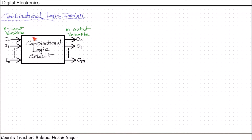In this lecture we will start with a new topic: combinational logic design. A combinational circuit consists of logic gates whose outputs at any time are determined directly from the present combination of inputs without considering the previous output. The previous output would need to be kept in memory, which is covered in sequential circuits. Here, in a combinational circuit, the present output depends on present inputs.